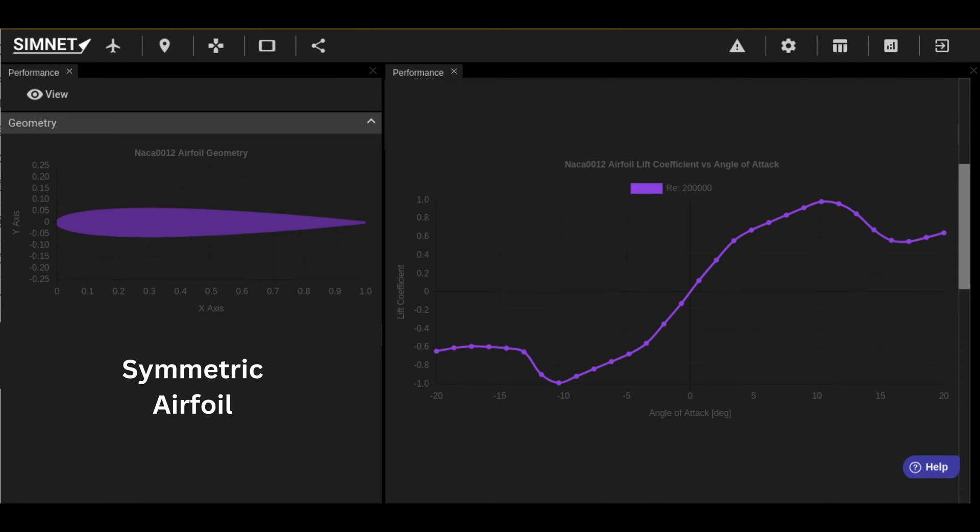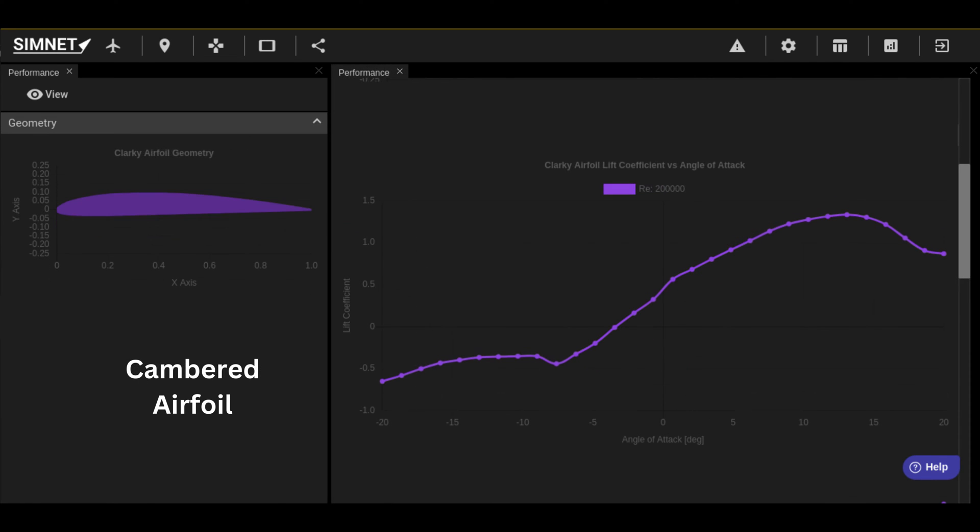Let's use SimNet to explore the lift and drag characteristics of typical airfoils. This is a typical plot for a symmetric airfoil's lift coefficient versus its angle of attack. Notice that increasing the angle of attack of the airfoil increases its lift. Also notice that since this airfoil is symmetric, it produces zero lift at zero angle of attack, and the lift curve is symmetric in negative and positive angle of attacks. Let's compare this to the lift coefficient curve of a cambered or non-symmetric airfoil. Notice that the cambered airfoil is able to produce lift even at zero angle of attack. Generally speaking, cambered airfoils are often capable of providing better lift performance, which is why camber is a common feature in airfoil design.